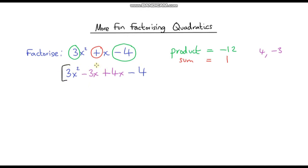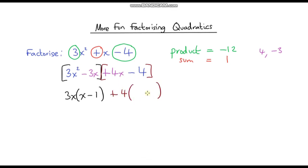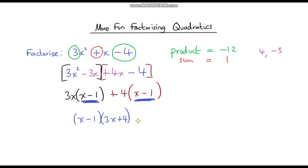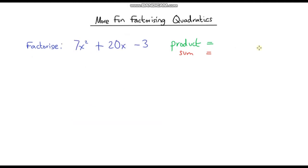I can split this expression into two parts. Focusing on the black part, I can factor out a 3x, leaving x minus 1 in the brackets. Then focusing on the other part, I can factor out a positive 4, also leaving x minus 1 in the brackets. Since both terms contain x minus 1, I can factor that out, leaving 3x plus 4. You can check by expanding the brackets.